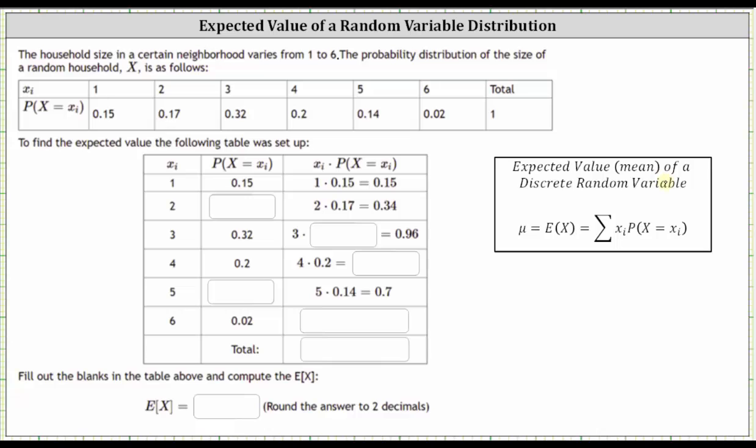To find the expected value or mean of a discrete random variable, we need to find the sum of the products of the outcome and the corresponding probability. To do this, we organize the information in a table where in the first column we have the outcomes, in the second column we have the corresponding probabilities, in the third column we find the product of the outcome and the probability, and then we sum this third column.